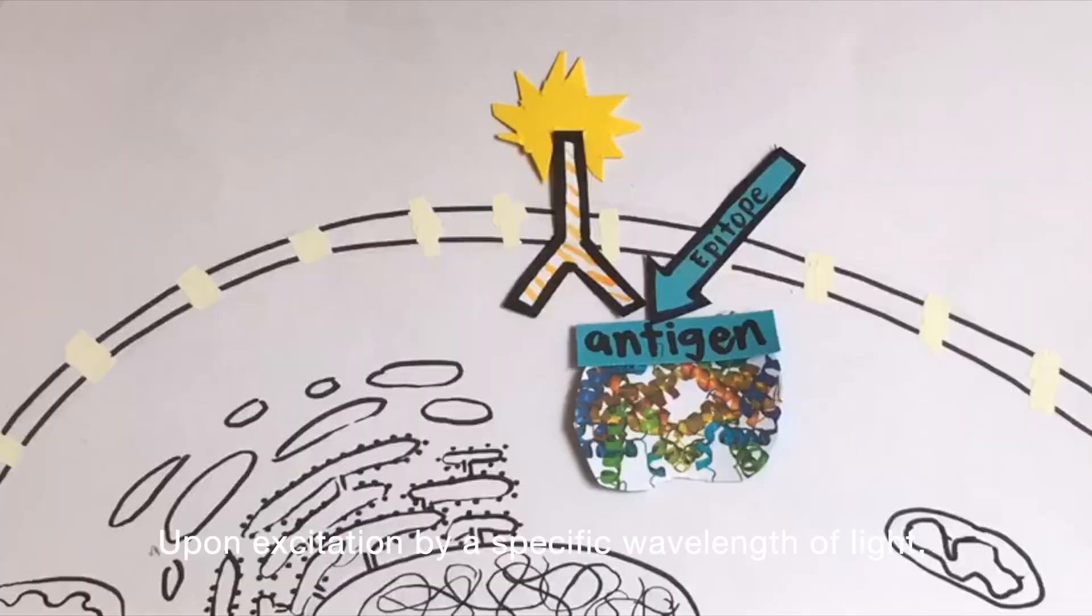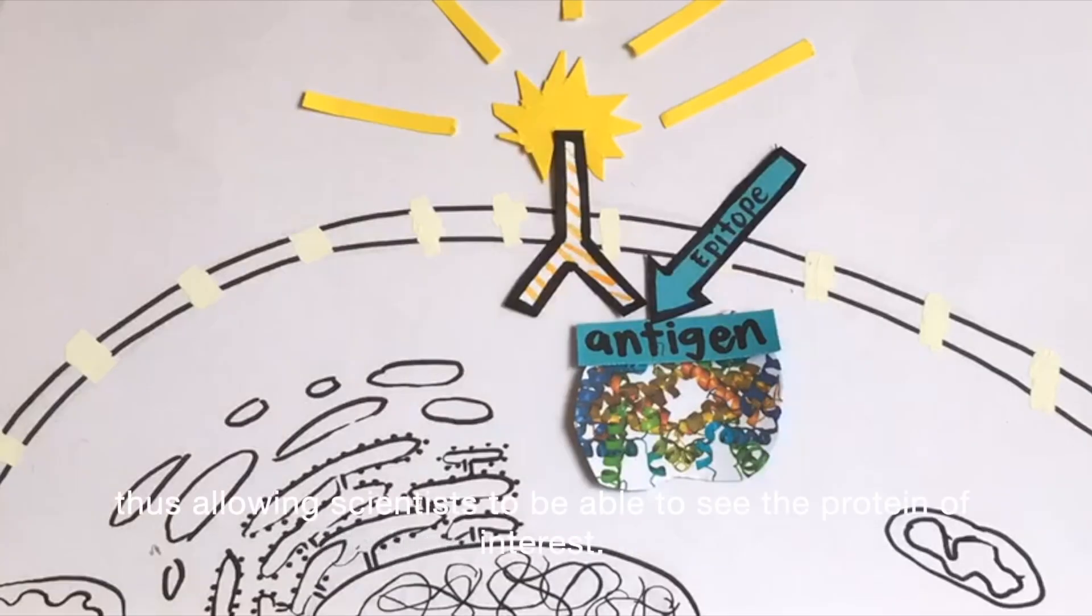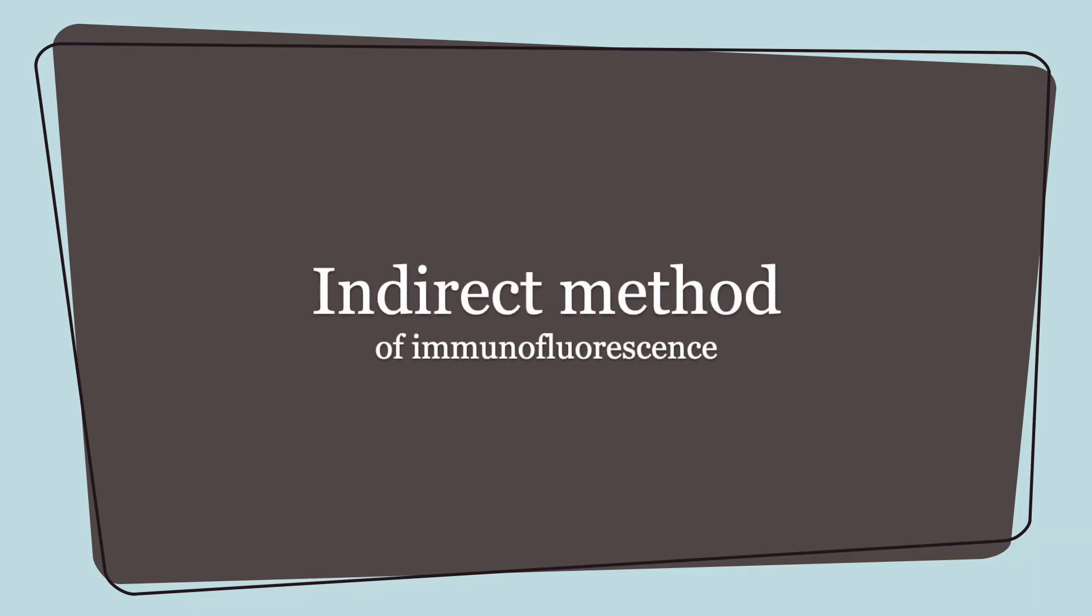Upon excitation by a specific wavelength of light, the fluorochrome emits light, thus allowing scientists to be able to see the protein of interest. Then what is the indirect method about? You may wonder.